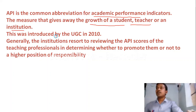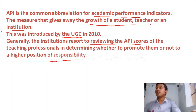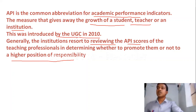API was introduced by UGC in 2010. Generally, institutions use the API scores of teaching professionals to determine whether to promote them to a higher position of responsibility. API stands for Academic Performance Indicator — the measure that gives away the growth of a student, teacher, or an institution — introduced by UGC in 2010.